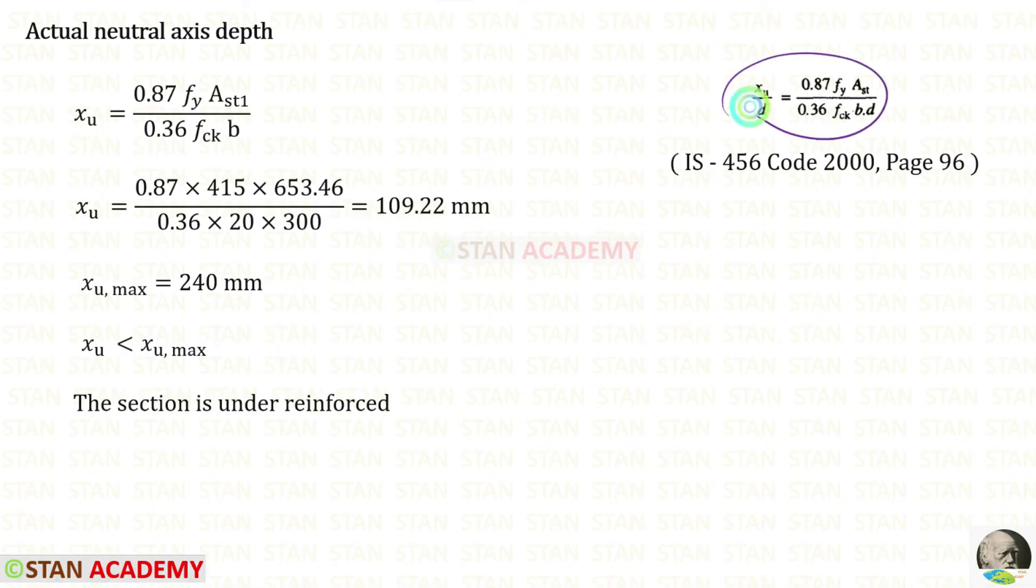Now we can take this expression. We can eliminate D on both of the sides. Instead of AST we have to apply AST1. For XU we will get this which is less than XU max. In this case the section is under reinforced. In the next calculations we have to use XU. Suppose if the section is over reinforced, we have to use XU max.